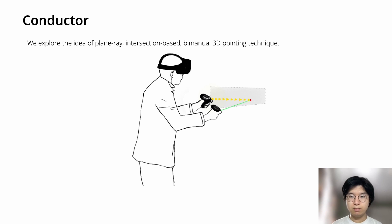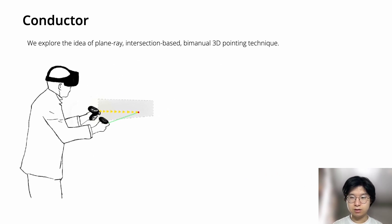In this paper, we propose Conductor, an intuitive plane-ray intersection-based 3D pointing technique where users leverage bimanual input to control a ray and an intersecting plane. As shown in this picture, there is a plane attached to the non-dominant hand, but it's invisible to users to avoid blocking the view.